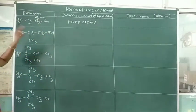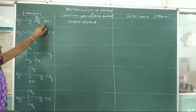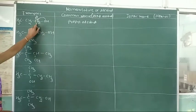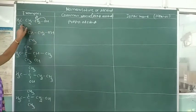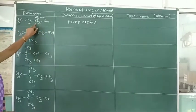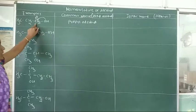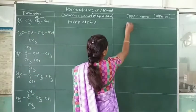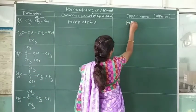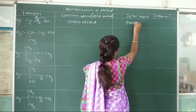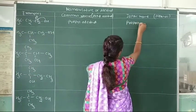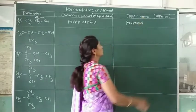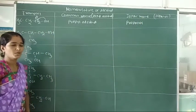In the IUPAC system, the hydroxy group is attached to the primary carbon atom. There are 3 carbon atoms, so the parent alkane is propane. The 'E' ending is replaced by 'OL', so the IUPAC name of this compound is propan-1-ol.